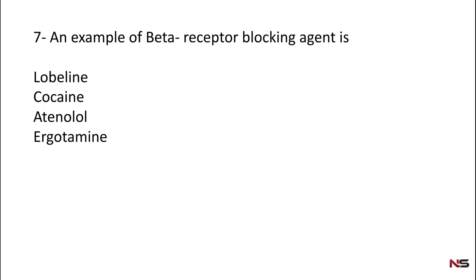Question 7: An example of a beta receptor blocking agent. Options: Lobeline, Cocaine, Atenolol, Ergotamine. Please write your answers. The correct answer is Atenolol — Atenolol is a beta blocker.